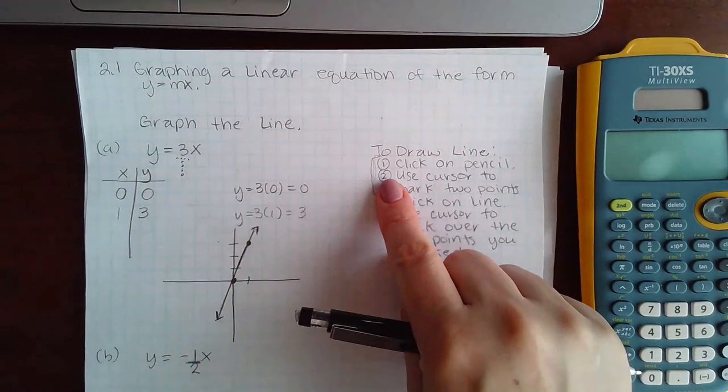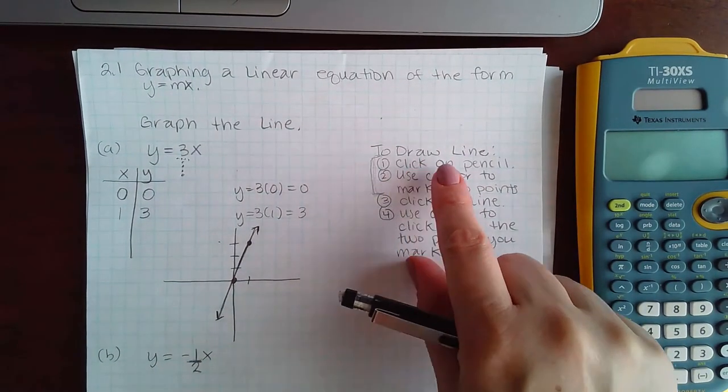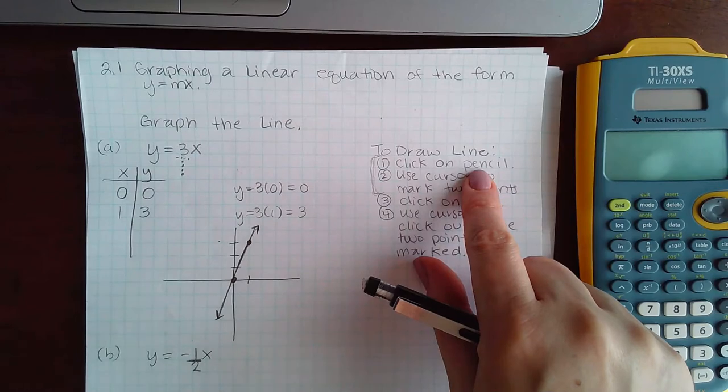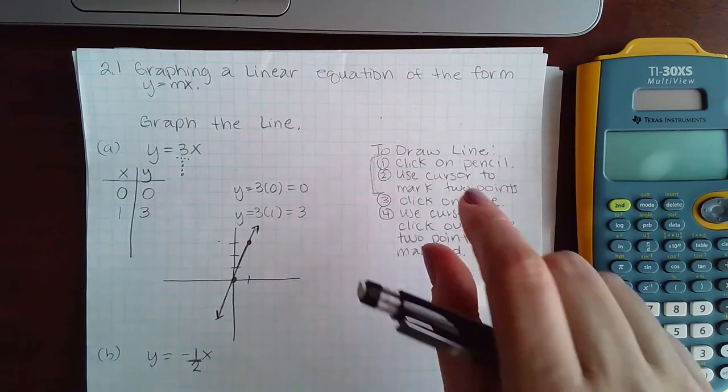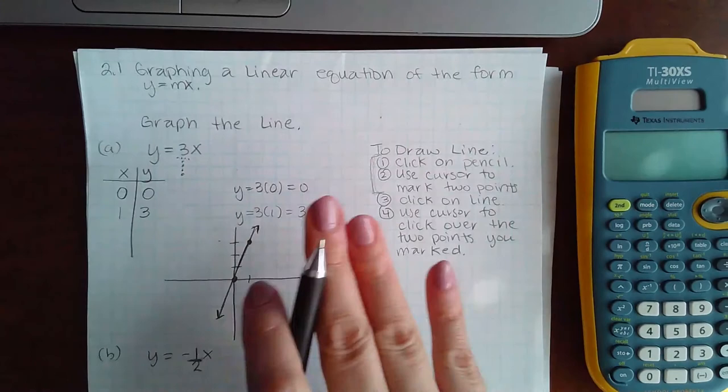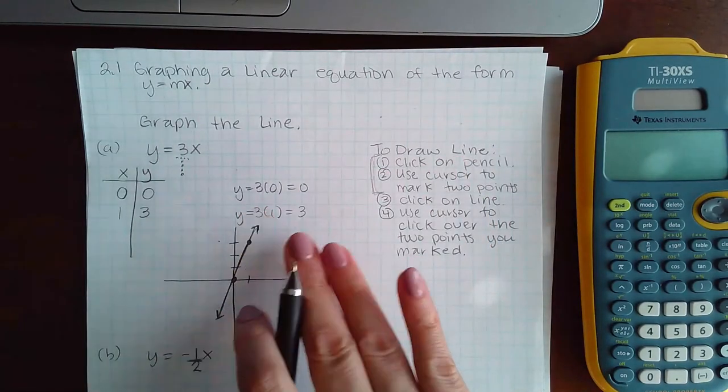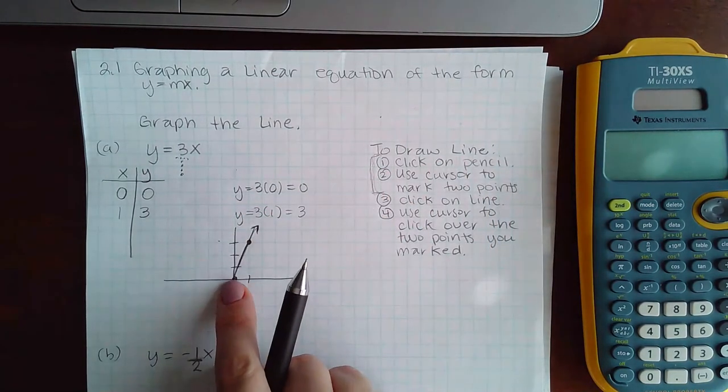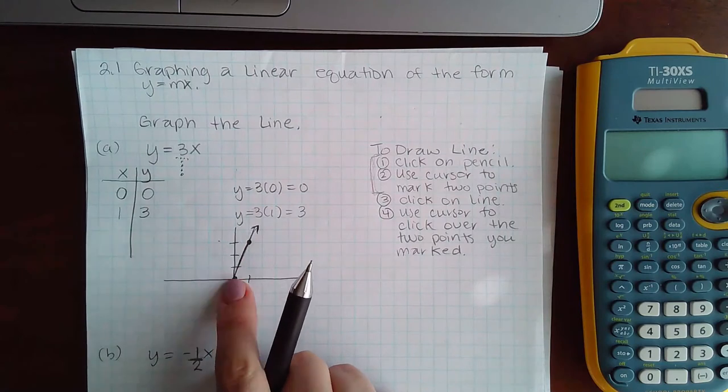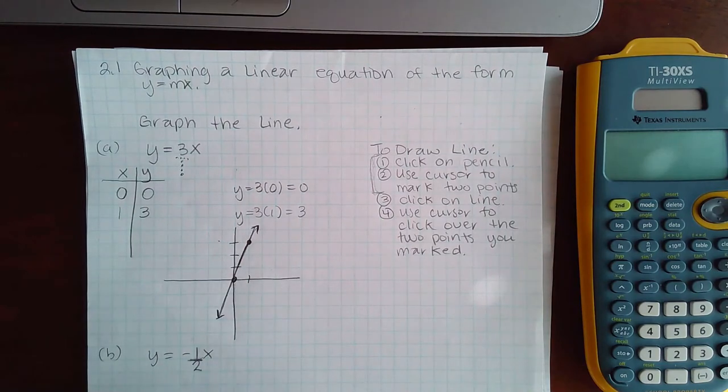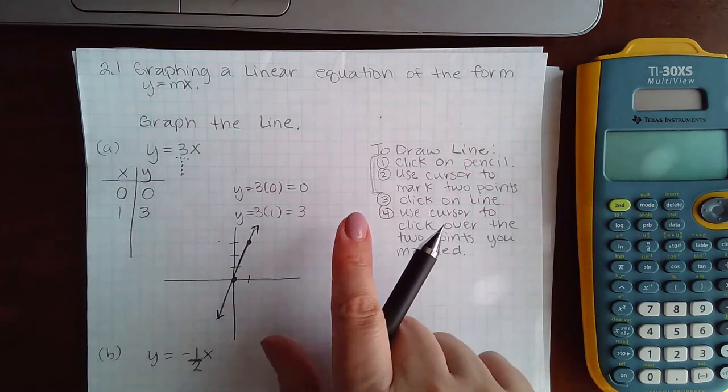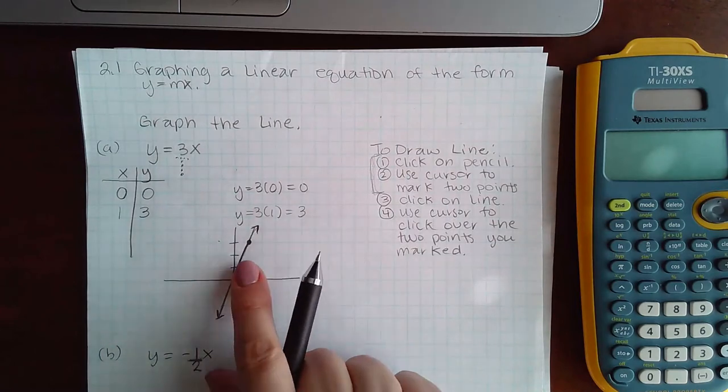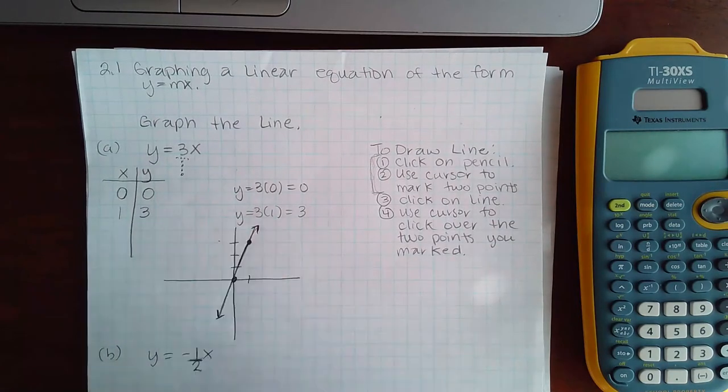The first thing you would do, this is what I would do, is I would click on the pencil icon that you see inside ALEKS. Then I would use the cursor, right, use my mouse to move the little dot around, the pencil around, until I get to zero zero, and then I would left click to plot the zero point.